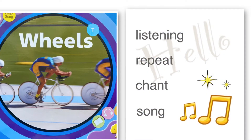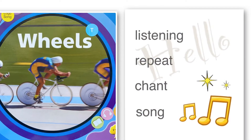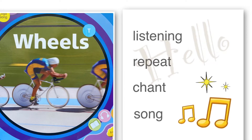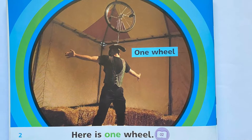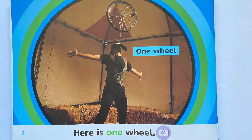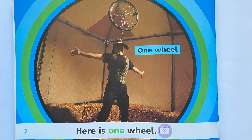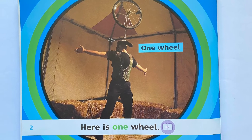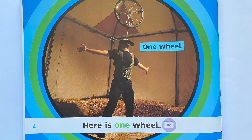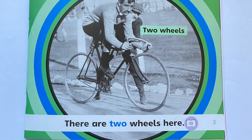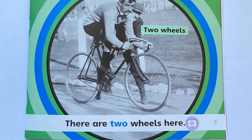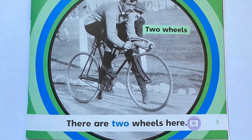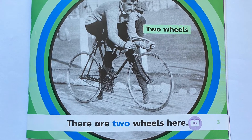Repeat. Wheels. One wheel. Here is one wheel. Two wheels. There are two wheels here.